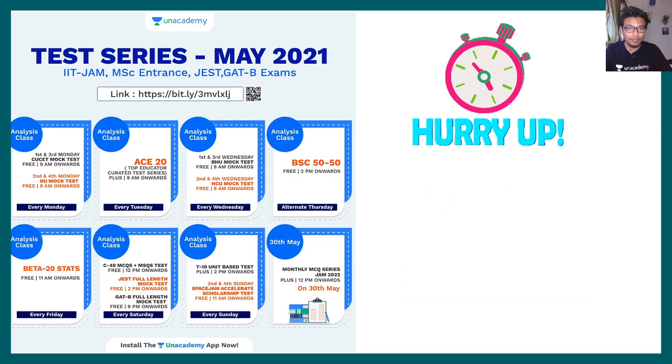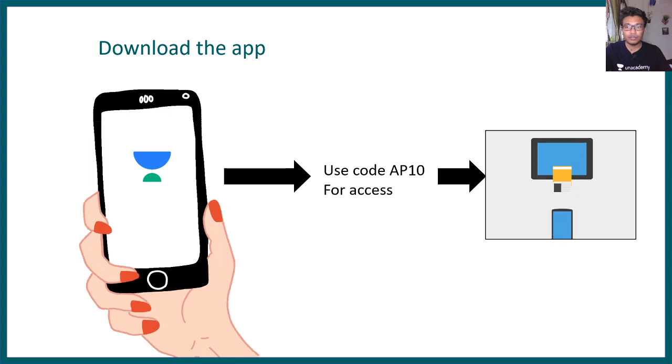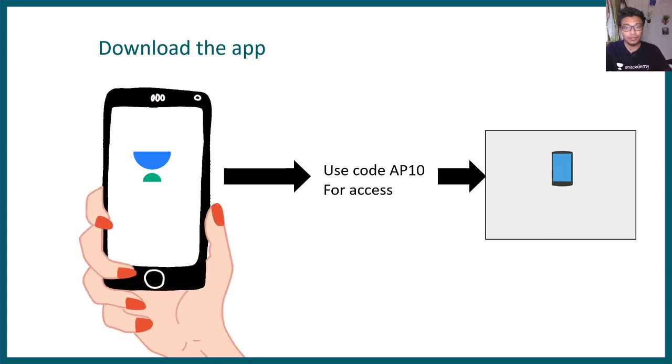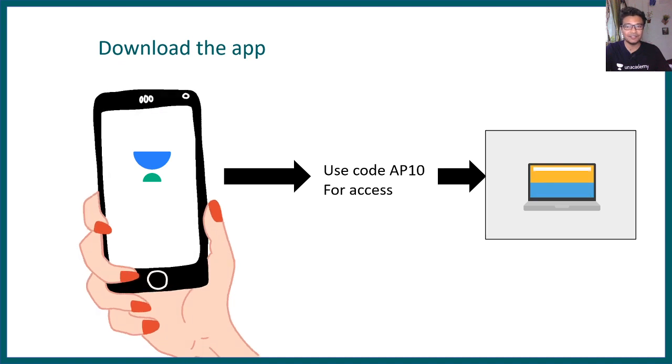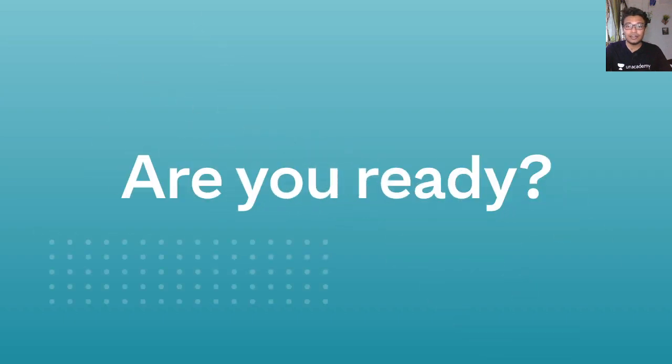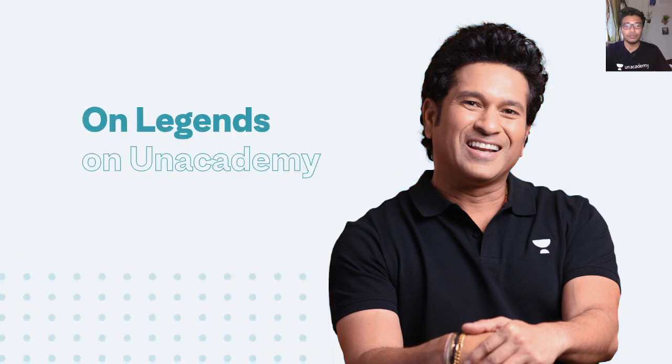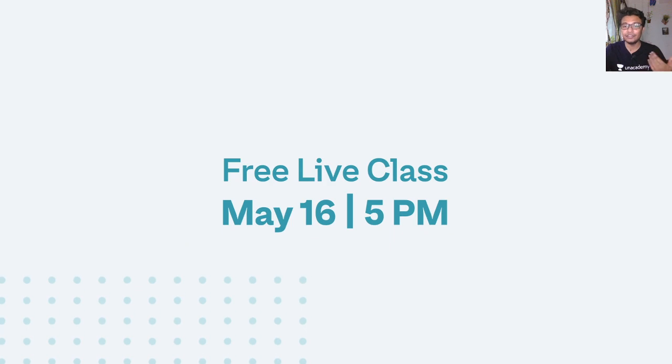You can use my code AP10 to get access to any of these things. The link would be provided in the description. You just need to download the app, use my code AP10 as an access code, and then you can start getting the benefit of all these materials. If you want to subscribe to Unacademy's Plus platform, you can still use my code AP10 to get a 10% discount. You need to believe that you can, and Unacademy gives you that confidence. On Unacademy, not only do you engage with the educators, but you can also learn from the biggest stars in India, like Sachin and many other people. Today Sachin would be online at five o'clock, so you can quickly go there and interact with him.